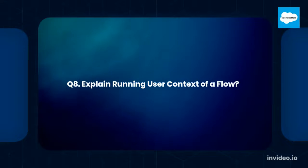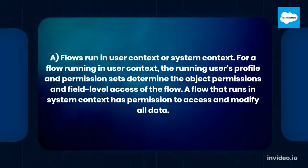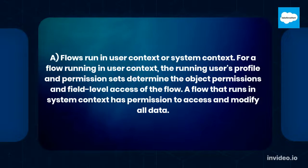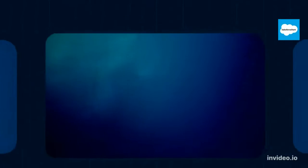Question number eight: Explain the running user context of a flow. Answer: Flows run in user context or system context. For a flow running in user context, the running user's profile and permission sets determine the object permissions and field-level access of the flow. A flow that runs in system context has permission to access and modify all data.